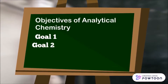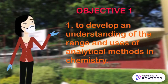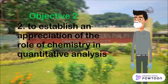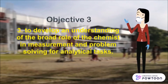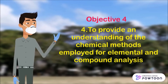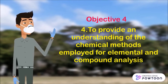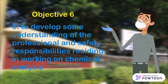Objectives of Analytical Chemistry: To develop an understanding of the range and uses of analytical methods in chemistry. To establish an appreciation of the role of chemistry in quantitative analysis. To develop an understanding of the broad role of the chemist in measurement and problem solving for analytical tasks. To provide an understanding of chemical methods employed for elemental and compound analysis, and to provide experience in some scientific methods employed in analytical chemistry, including professional and safety responsibilities when working on chemical analysis.